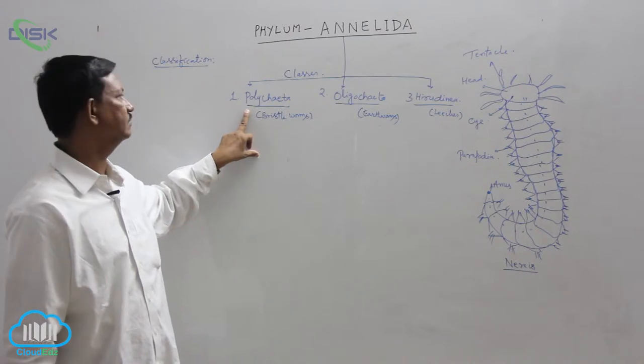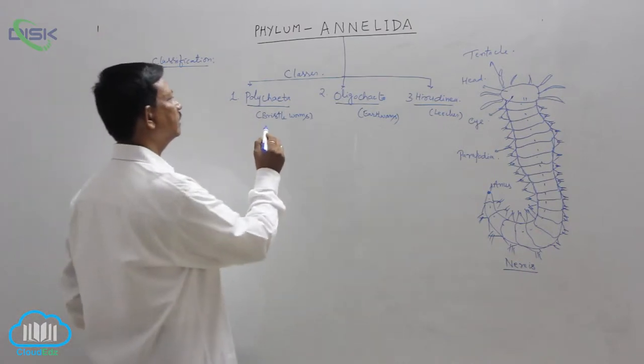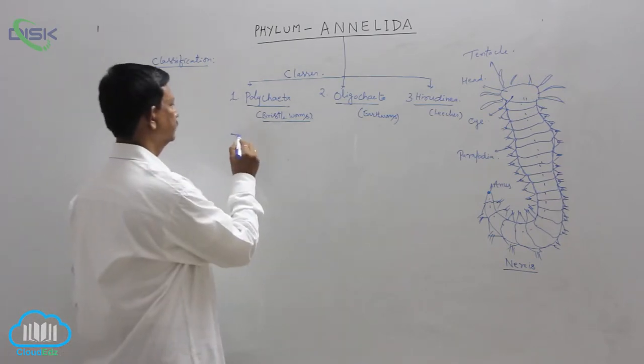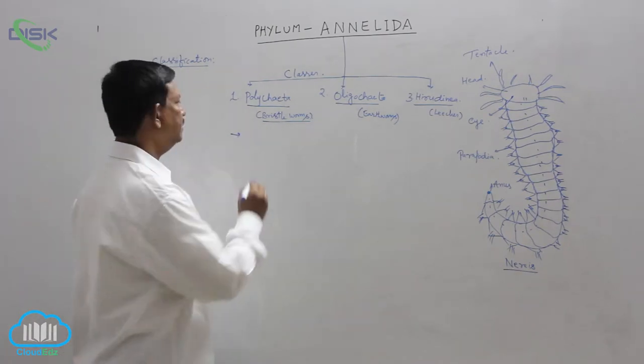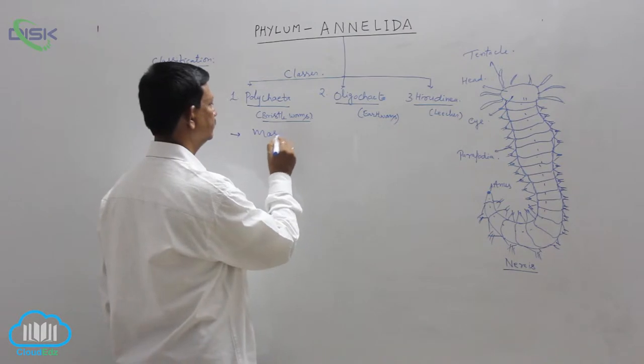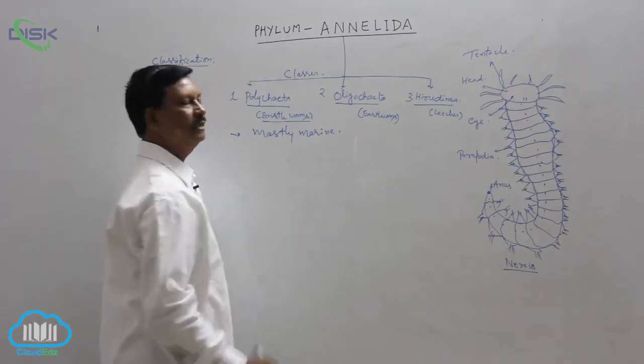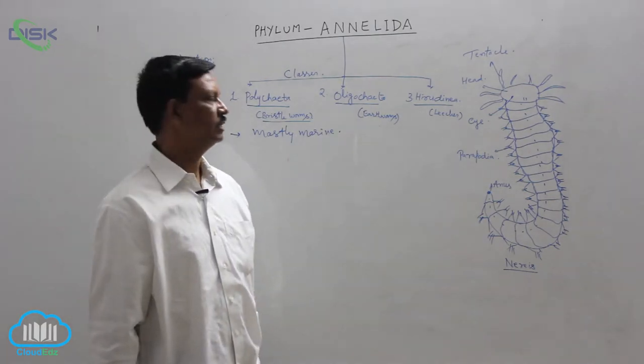Many setae are present. These are commonly known as bristle worms. They are mostly marine animals. Large numbers of polychaetes are found in marine water.